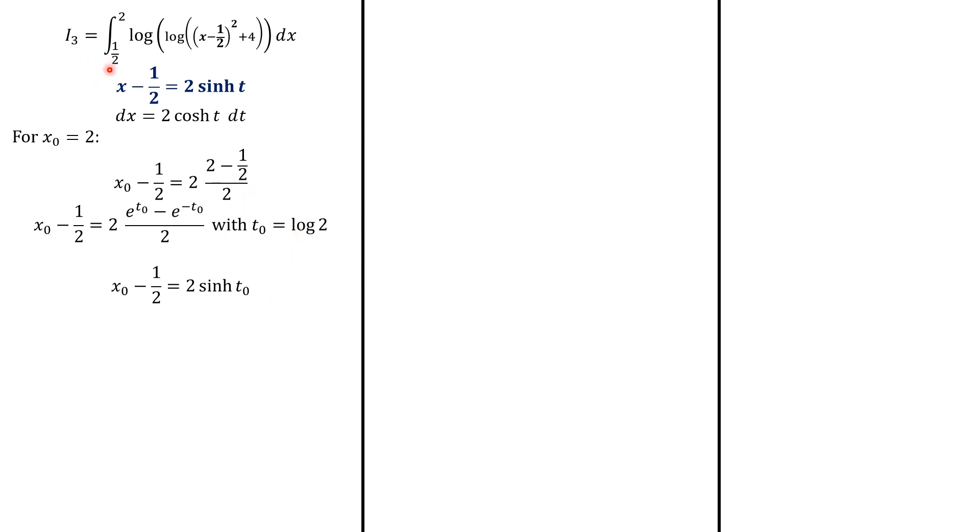So we divide it by 2 and we multiply by 2 to have everything right. And then we know that 2 is e to log 2. That's what we have written here. And then we see that it is 2 times sinh of t0. And t0 equals log 2. That's good. Now, for the lower limit, we know that x minus 1 over 2 is going to be 0. So that t here equals 0.